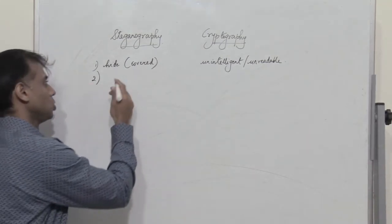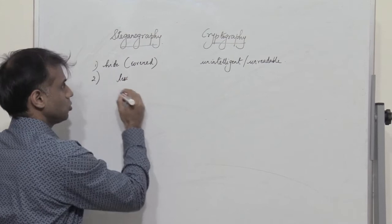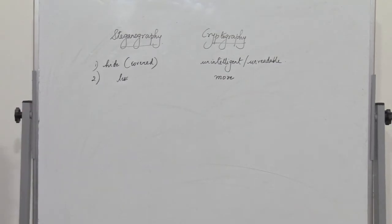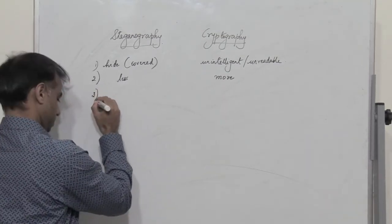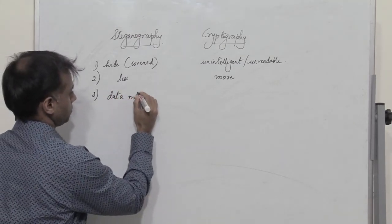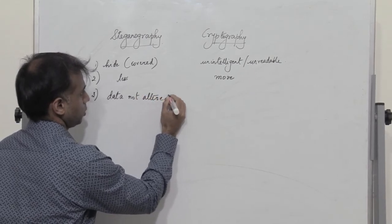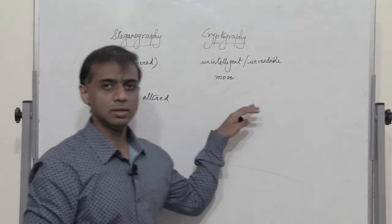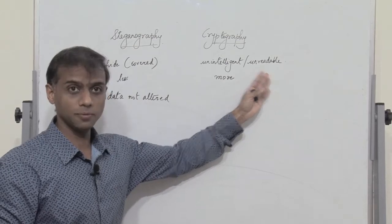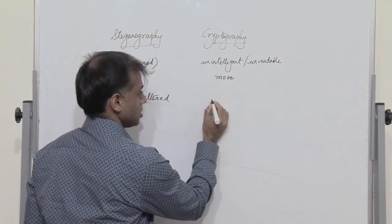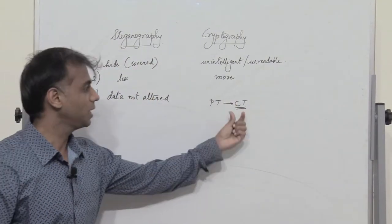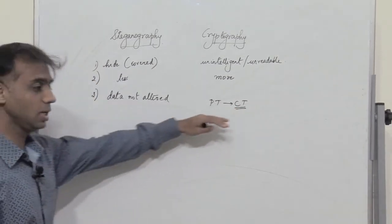Steganography is less widely used when compared to cryptography, which is more widely used. Another difference: in steganography the data is not altered, whereas in cryptography the data itself undergoes a change and is converted into an unintelligent or unreadable format. The plaintext is converted to ciphertext, so the data gets completely altered.